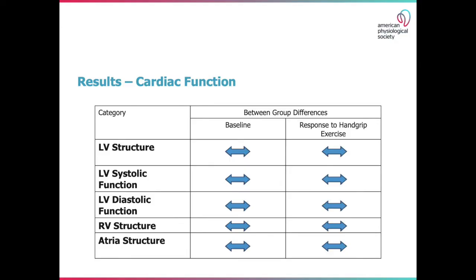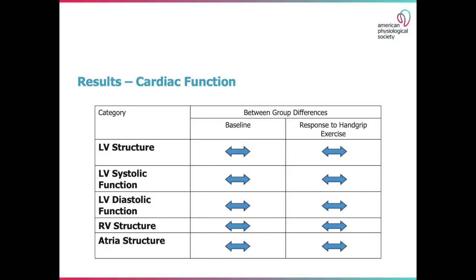However, when looking at cardiac mechanics using speckle tracking technology, we see that left ventricular movement is mostly similar between groups, with the exception of apical rotation and rotation rates, which were lower in cannabis users.